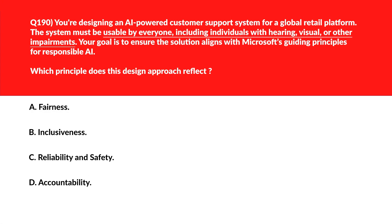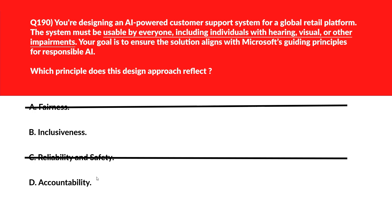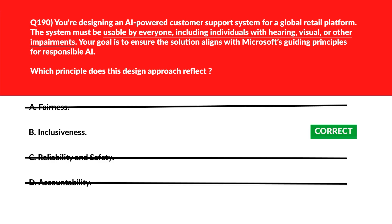We have a classic question related to AI principles. Option A says fairness — fairness addresses bias and equal treatment, not accessibility design, so it's out. Option B says inclusiveness — inclusiveness ensures AI systems empower users of all abilities, including those with hearing or visual impairments, so let's keep it. Option C says reliability and safety — this focuses on performance and risk mitigation, not user inclusion, so it's out. Option D says accountability — accountability ensures human oversight, not design for diverse user requirements. We'll lock option B, inclusiveness, as the right answer.